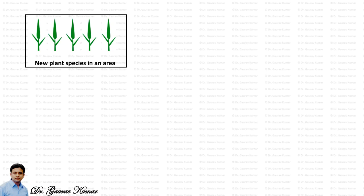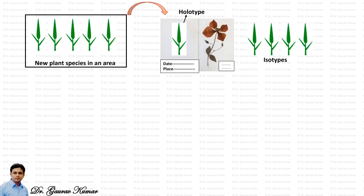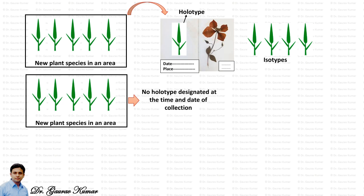Suppose you visit an area where you find a new plant species and collect five plants. You paste one plant in a herbarium sheet for the record with the correct date and place of collection, and keep the other four as reserve plants. The one pasted in the herbarium for original publication is called the holotype, while the other four kept as reserve are called isotypes.